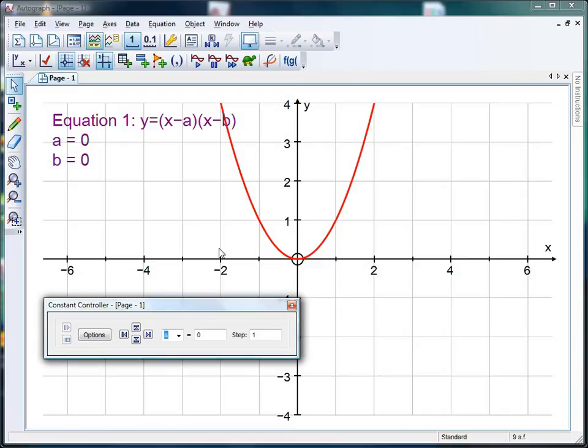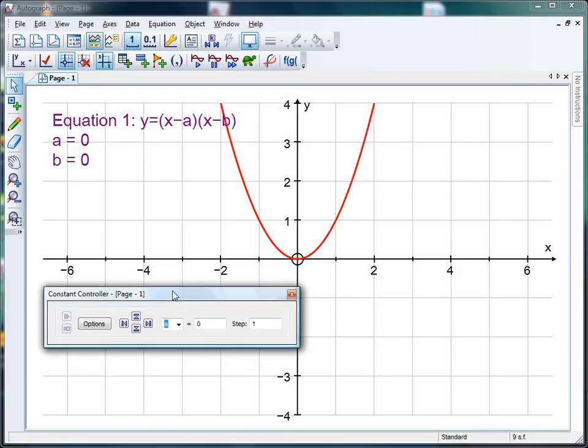Now I can manipulate things and say to the students, OK, if I set my value of a to one, what's going to happen to my graph? Once they figure that out, and only once they've made some predictions, then I can start manipulating things. If I increase the value of a to one, the graph suddenly goes through (1, 0). Now what happens if I put my value of b to minus one? Well now the graph still goes to (1, 0) but now it also goes to (-1, 0).